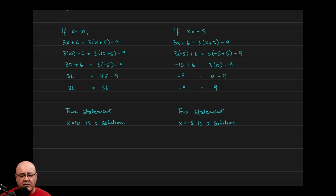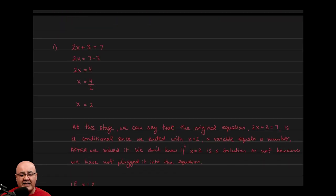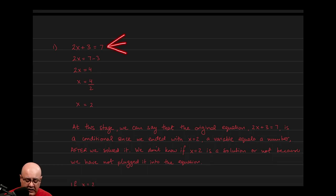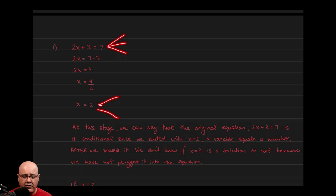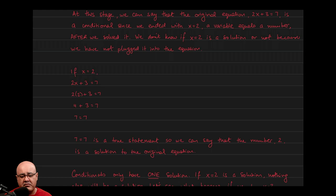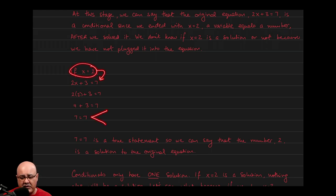To summarize: when classifying a linear equation, the three options are identity, inconsistency, or conditional. If you have a variable left over at the end, it's a conditional — plug the number in to confirm it's a solution. If you have no variables left and a true statement, it's an identity. If no variables remain and a false statement appears, it's an inconsistency. Hopefully that makes sense. We'll see you next time.